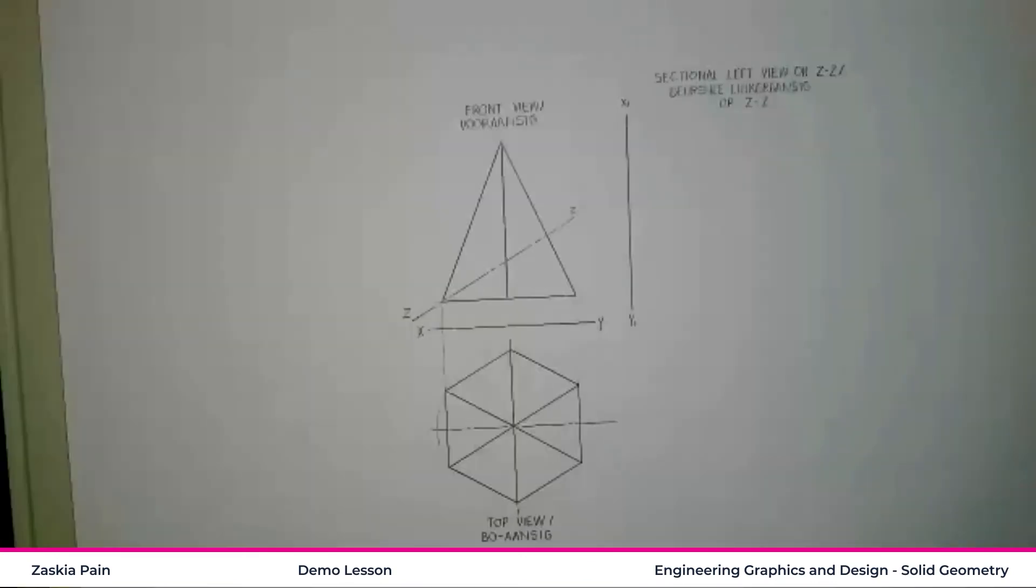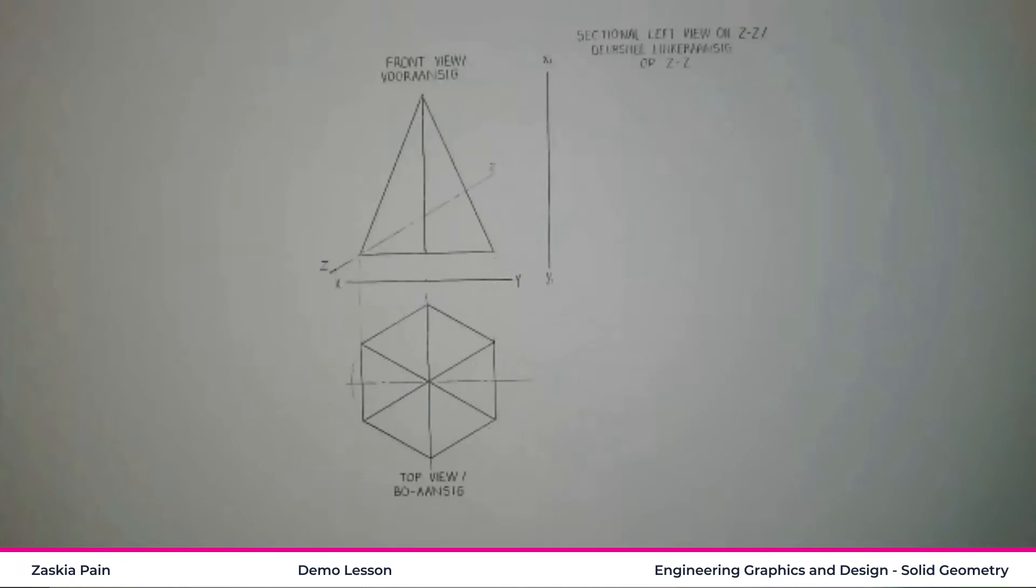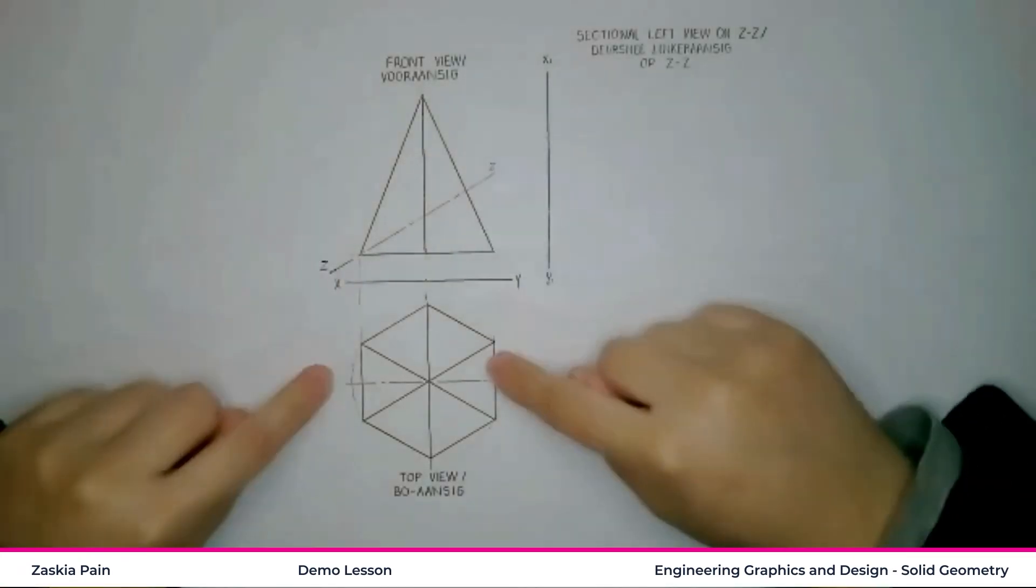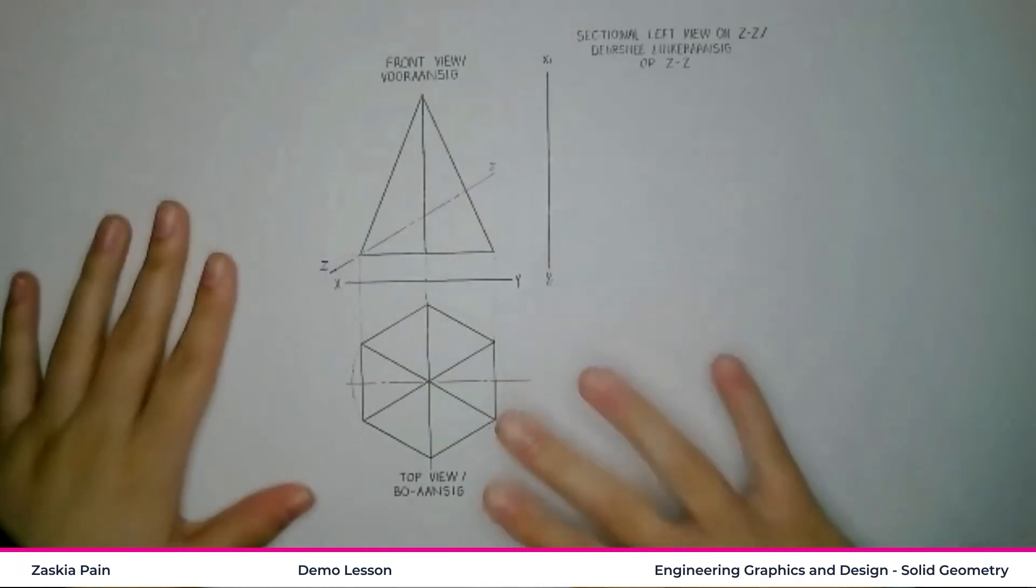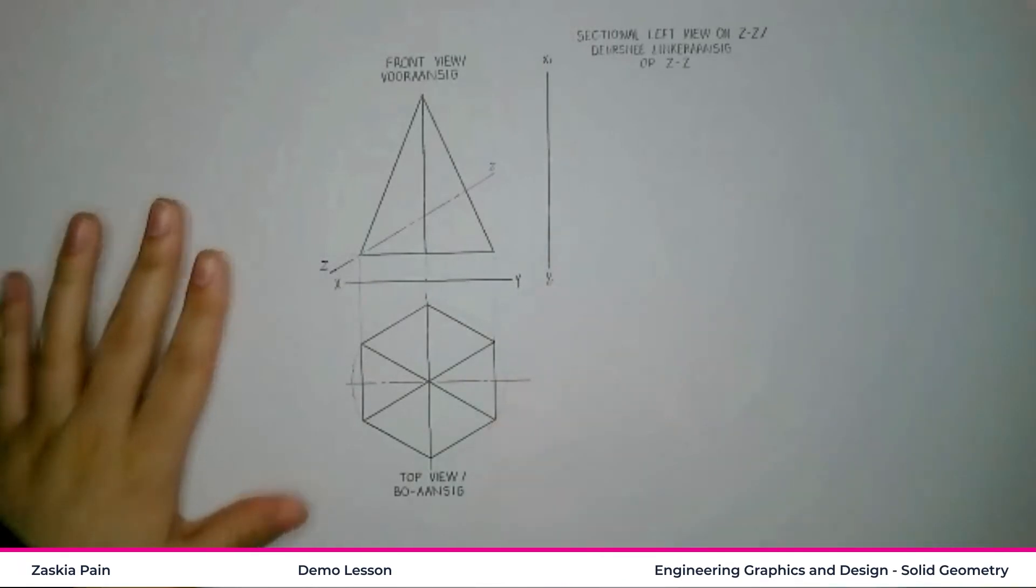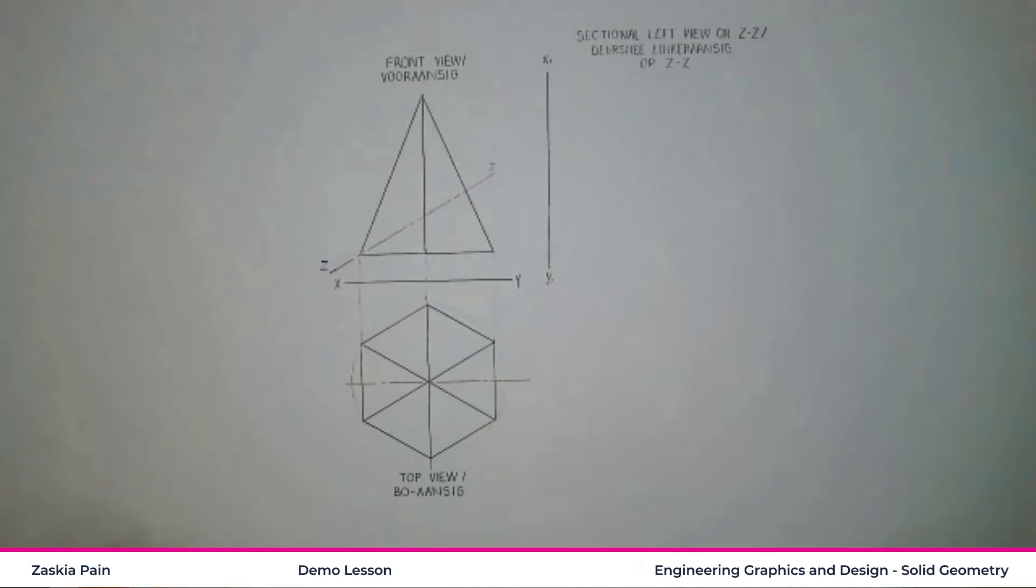But before I get too excited, let's draw something together. So here you can see my page. And in today's drawing, we have a front view and a top view. So these are our 2D views. And this is normally in first angle orthographic, which means everything is topsy-turvy town.